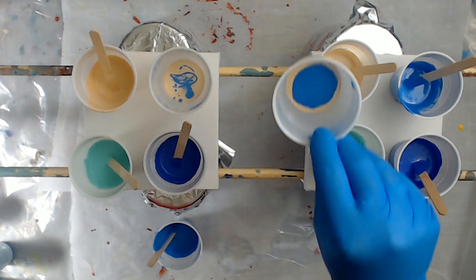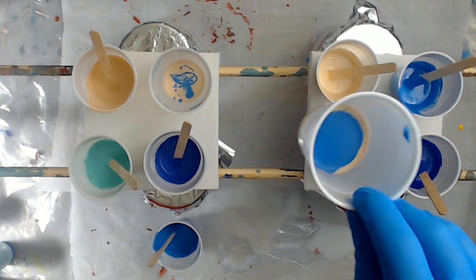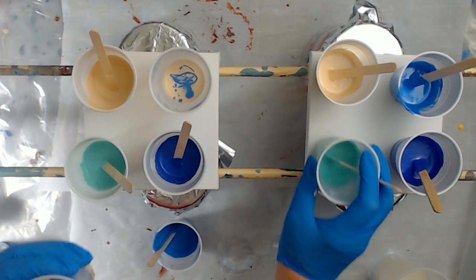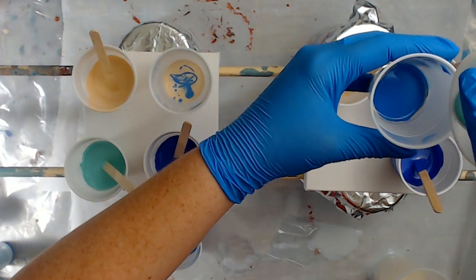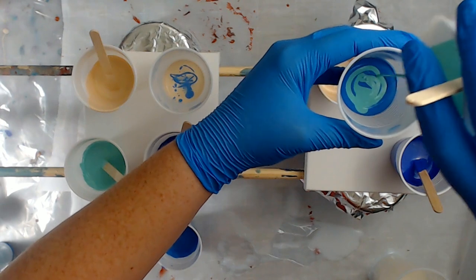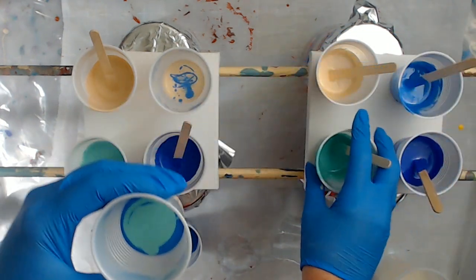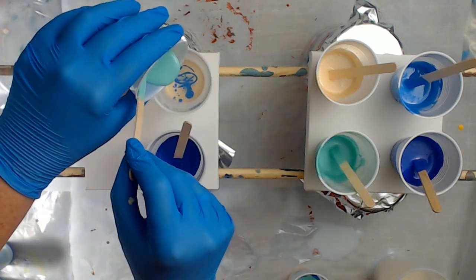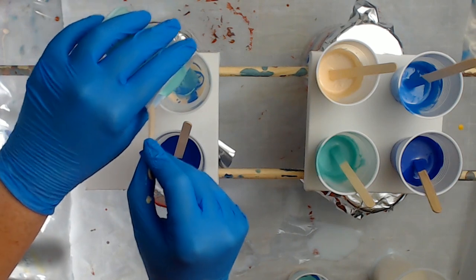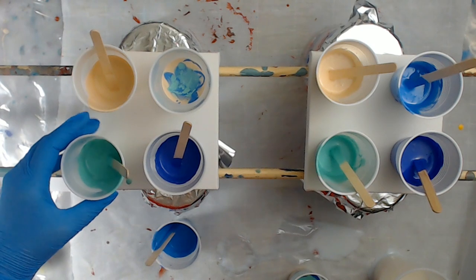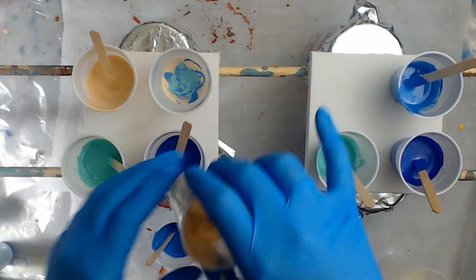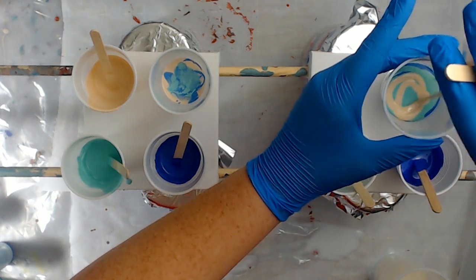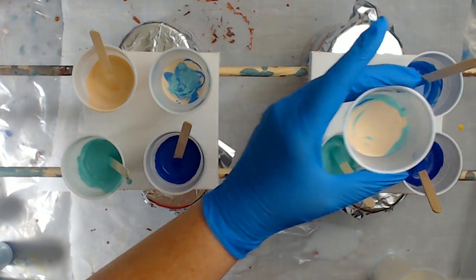Then we're going to do the lighter blue. If you can tell right away, it sunk in the Martha Stewart marbling medium. It did not in the pouring medium. We're going to have some green, and some more of our sandcastle color. Let's just dump the rest of it in there.